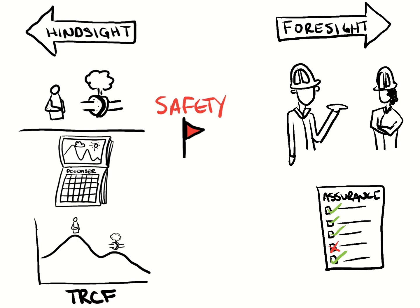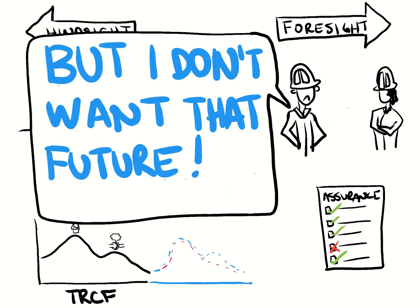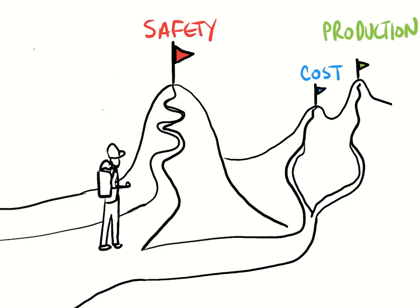Our hindsight metrics are usually applied in the way that what happened in the past will occur again in the future. And the foresight metrics might indicate that we're not likely to see exactly the same pattern as in the past. Combined, they can give us a good idea of what might happen next. But what if we don't want that future?